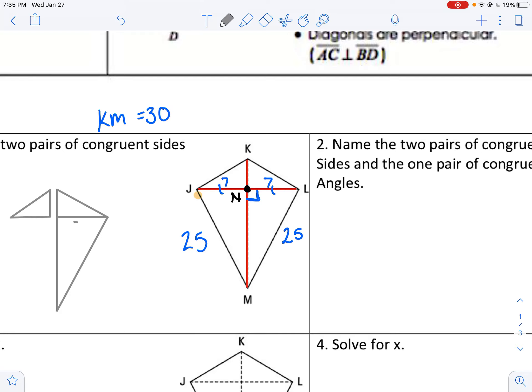So this is 7, this is 24, sorry 25. And what you can do is you can use the Pythagorean theorem to find your third side. 7 squared plus x squared equals 25 squared. And you can pause the video, come back, unpause, and check your work. So you should get 24.